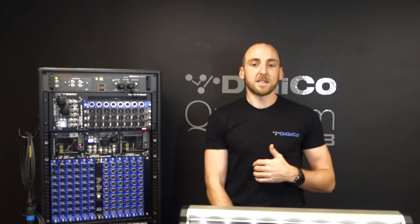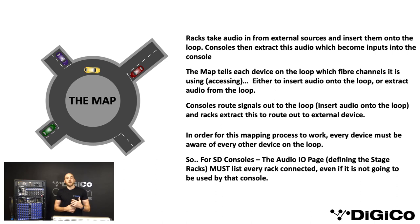But how does all this audio information actually get managed? Well, this is done via the optical mapping section. The optical mapping essentially works as you can see from the diagram. The racks take audio in from external sources and then insert them onto the loop. The consoles then extract this audio which becomes inputs into the console. The map tells each device on the loop which fiber channels it is using or accessing — either to insert audio onto the loop or extract audio from the loop. Consoles route the signals out to the loop, and racks extract this to route out to the external devices.